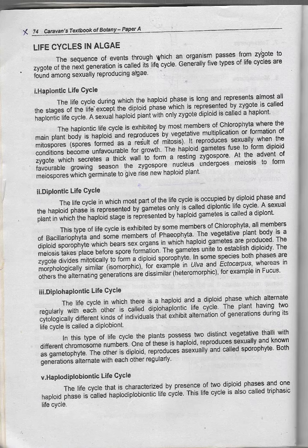In some species, both phases are morphologically similar — isomorphic — for example in Ulva and Ectocarpus. Whereas in others, the alternating generations are dissimilar — heteromorphic — for example in Fucus.